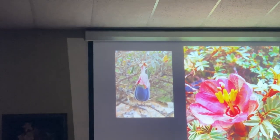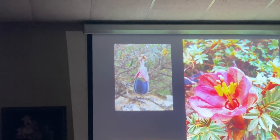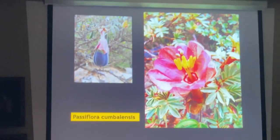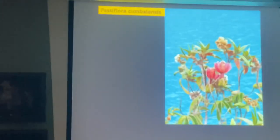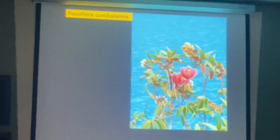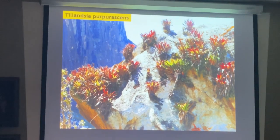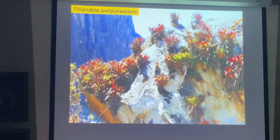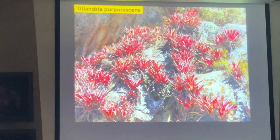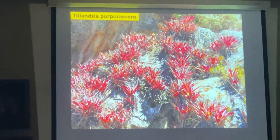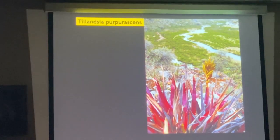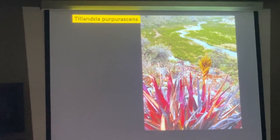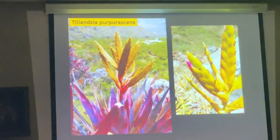A very nice Passiflora here — Passiflora cumbalensis, very distinctive compared to other Passifloras, with a very distinctive fruit. The lake always has a very bluish color, a sort of glacial lake color. Tillandsia purpurascens covering the rocks — just a forest of them. The flower is purple — not the bracts; the bracts are yellow.